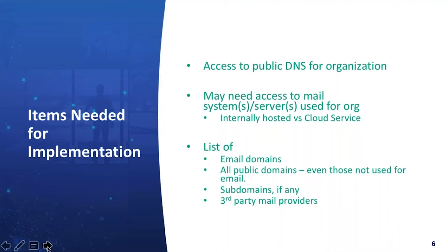If you don't know what third-party mail server providers you're using, the reports will tell you — for example, that messages seem to be coming from MailChimp. You can then determine who in your organization is using MailChimp. If nobody responds, and you're at the highest level, MailChimp can no longer be used. Someone will eventually say they're using it and need it authorized. That's the power of DMARC — reporting capability and control over who's sending email using your domain.